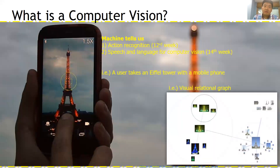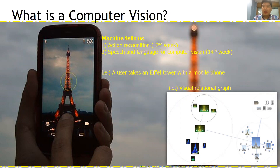Recently, computers can generate visual relationships and describe behavior with text. For example, a user takes a photo on their mobile phone and the computer interprets it. Like this, computer vision covers all things related to images and videos.